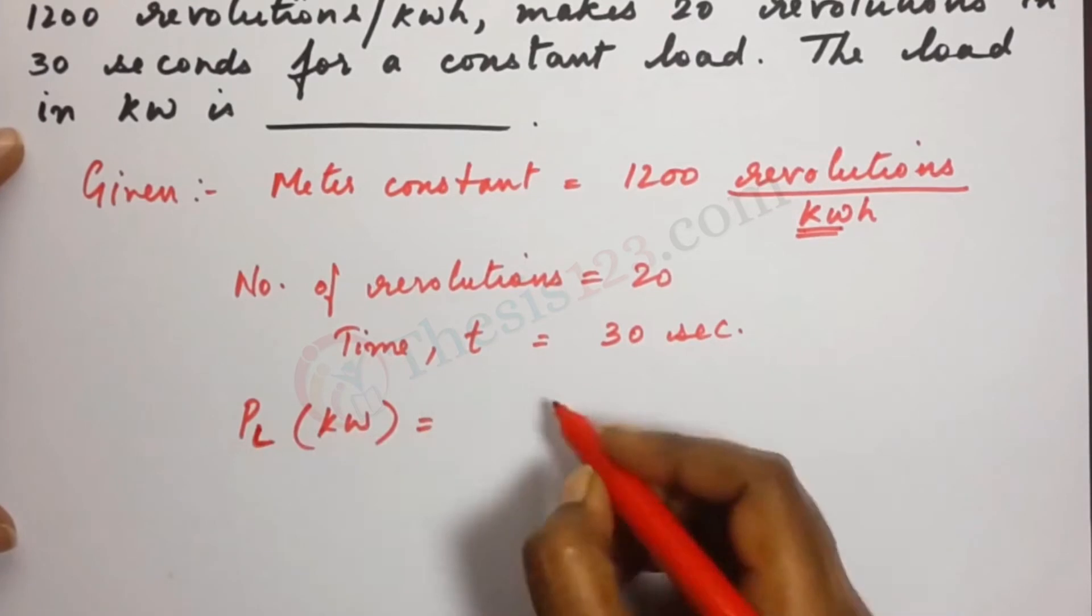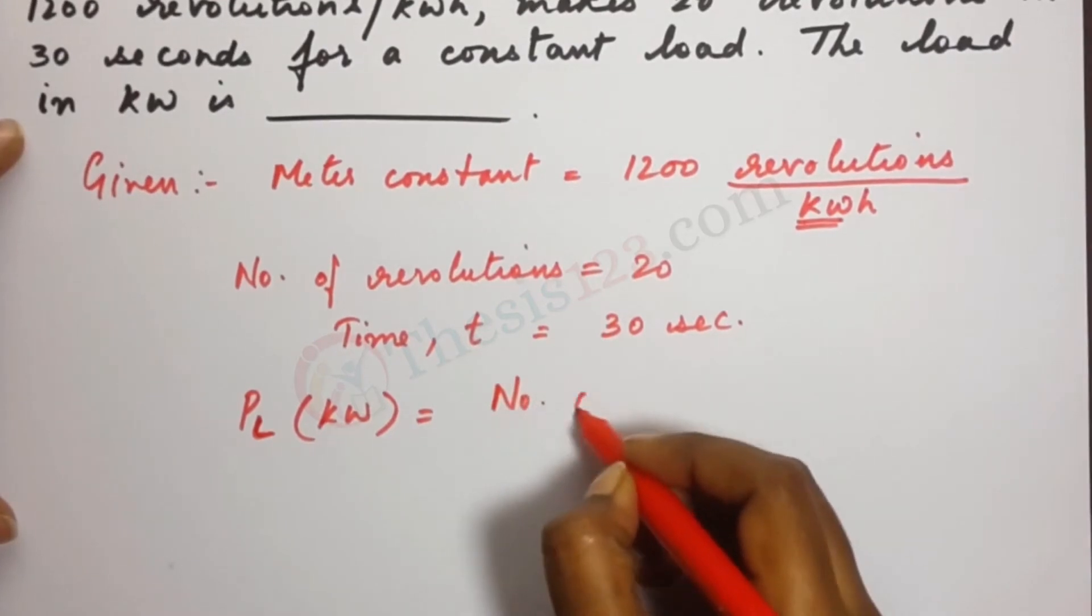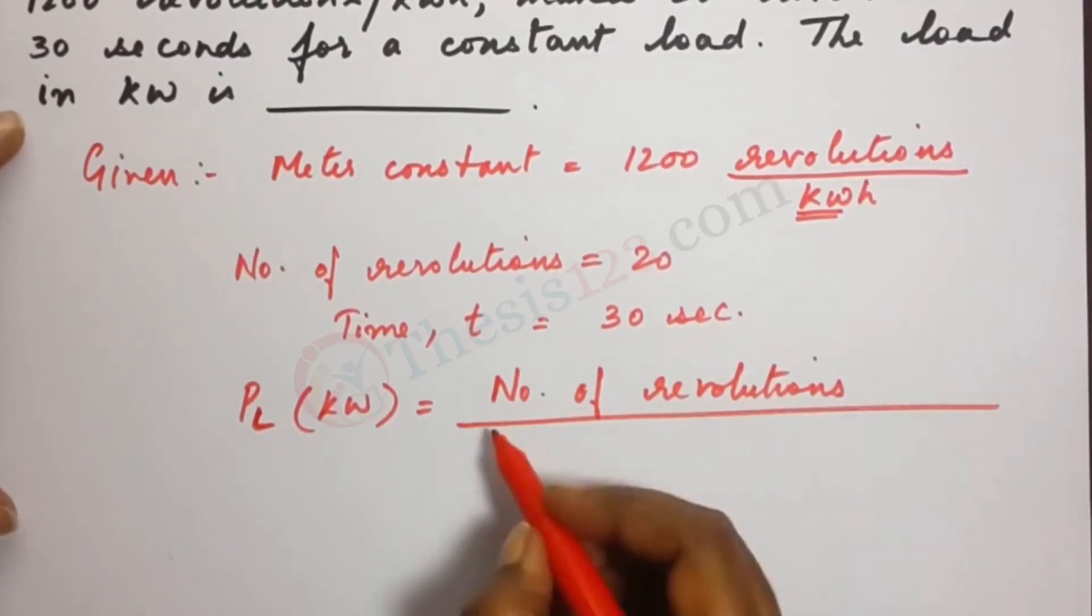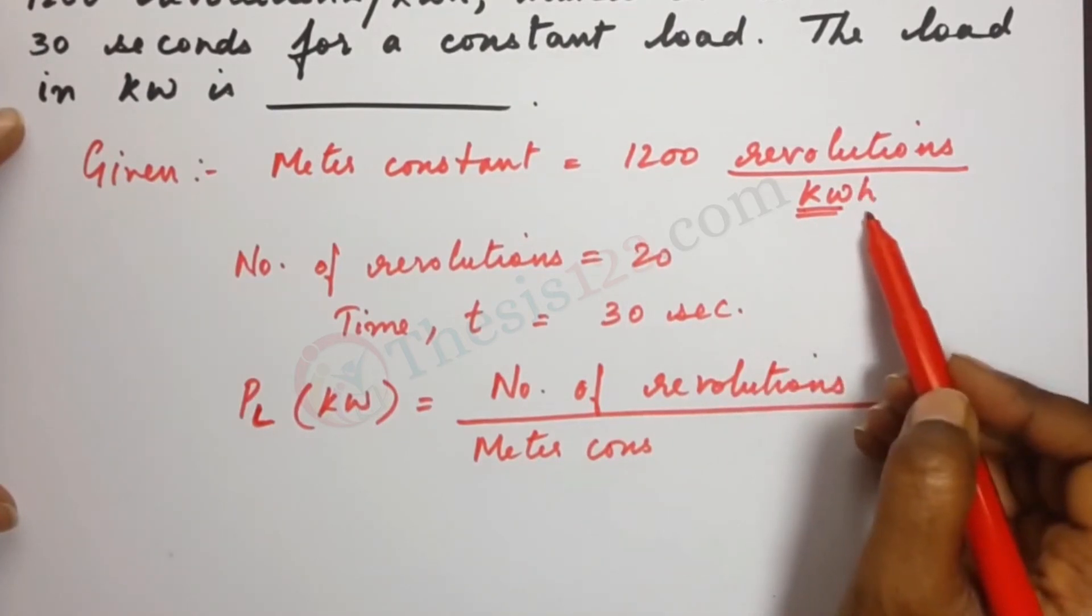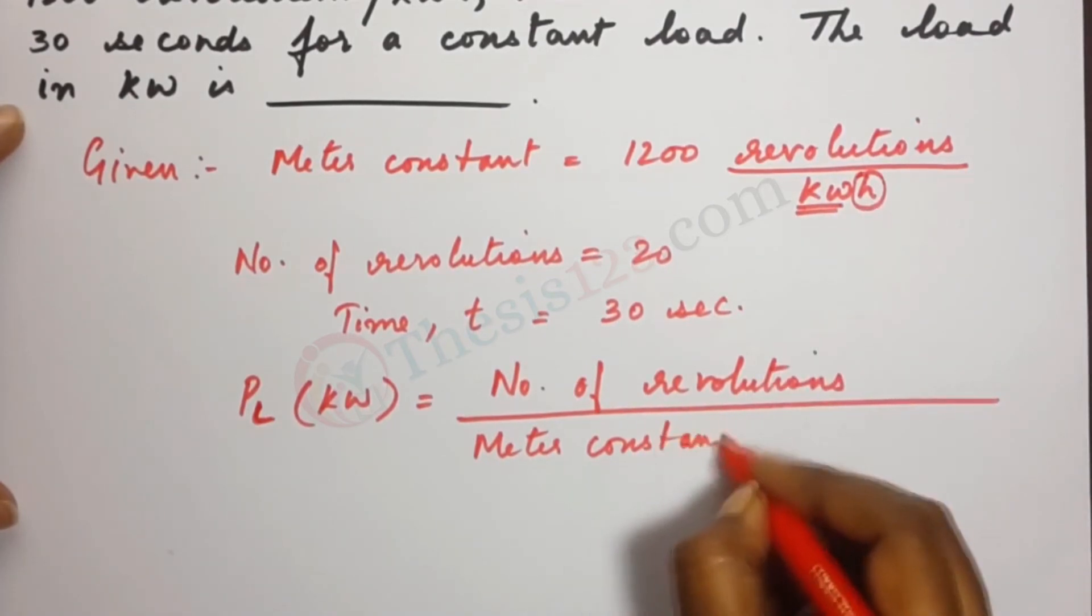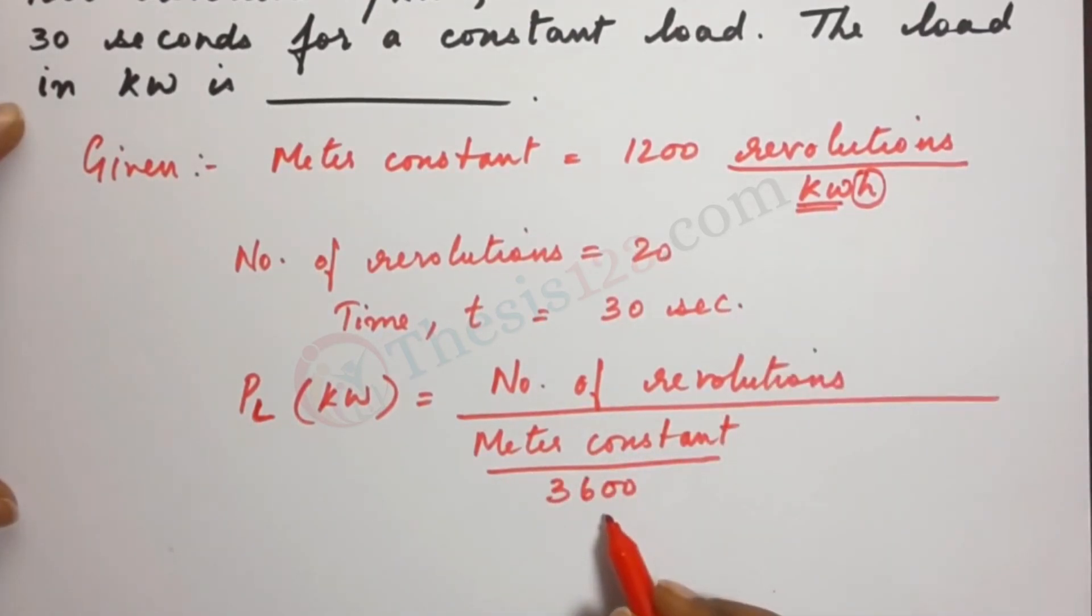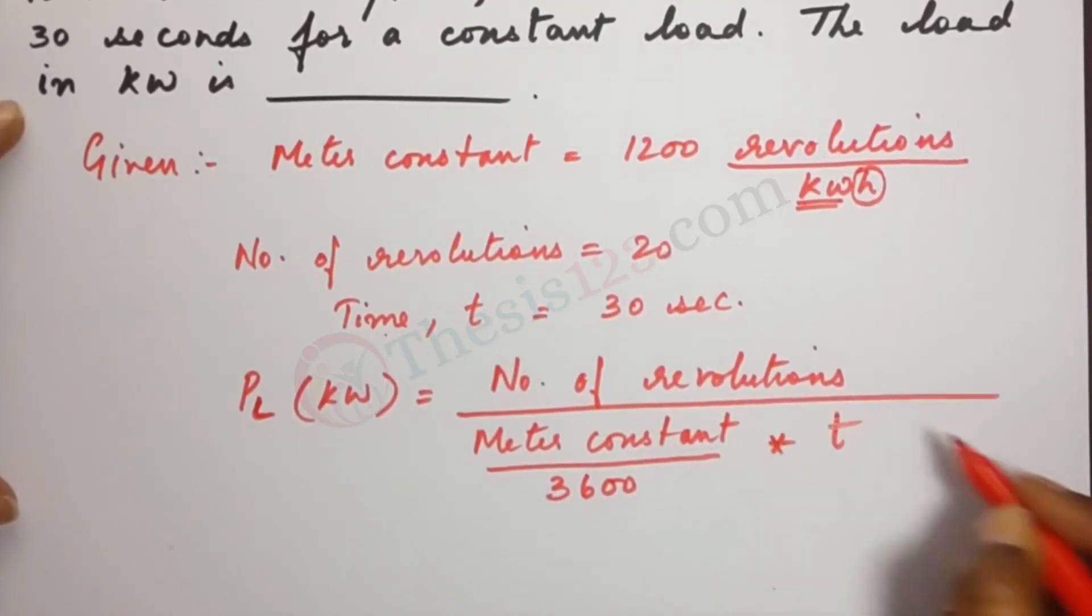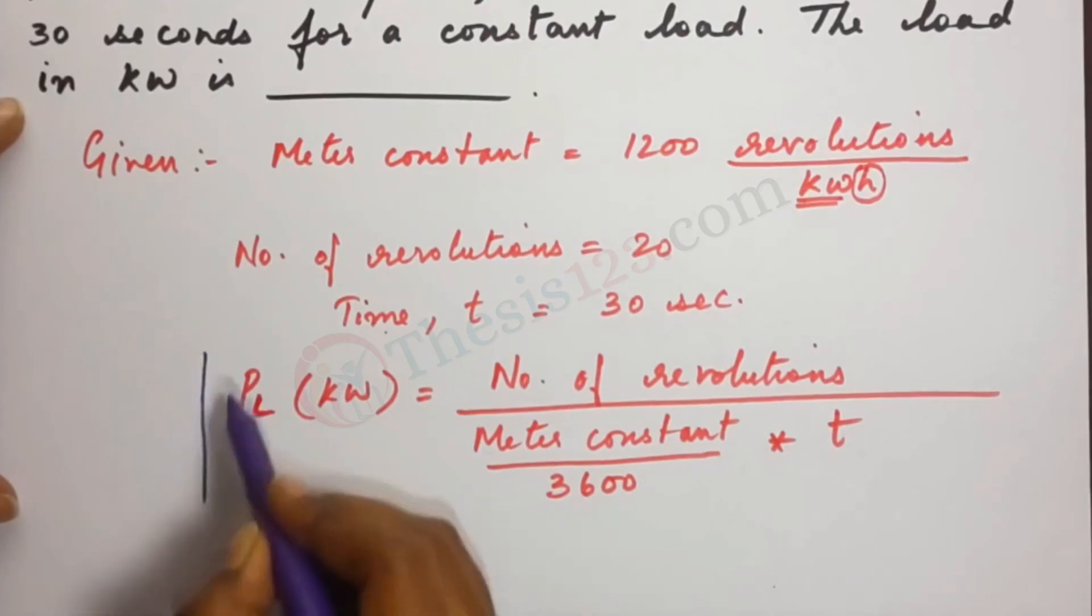So we can do that by writing the expression as we can start with the number of revolutions here. Number of revolutions divided by the meter constant. Now the meter constant is given in terms of revolutions per kilowatt hour. Now we have to accommodate the hours given here as well. So it would be constant divided by 3600 because in one hour we have 3600 seconds and we write the time in terms of seconds. Into time T. Okay, so this is our expression for the power, the load power.